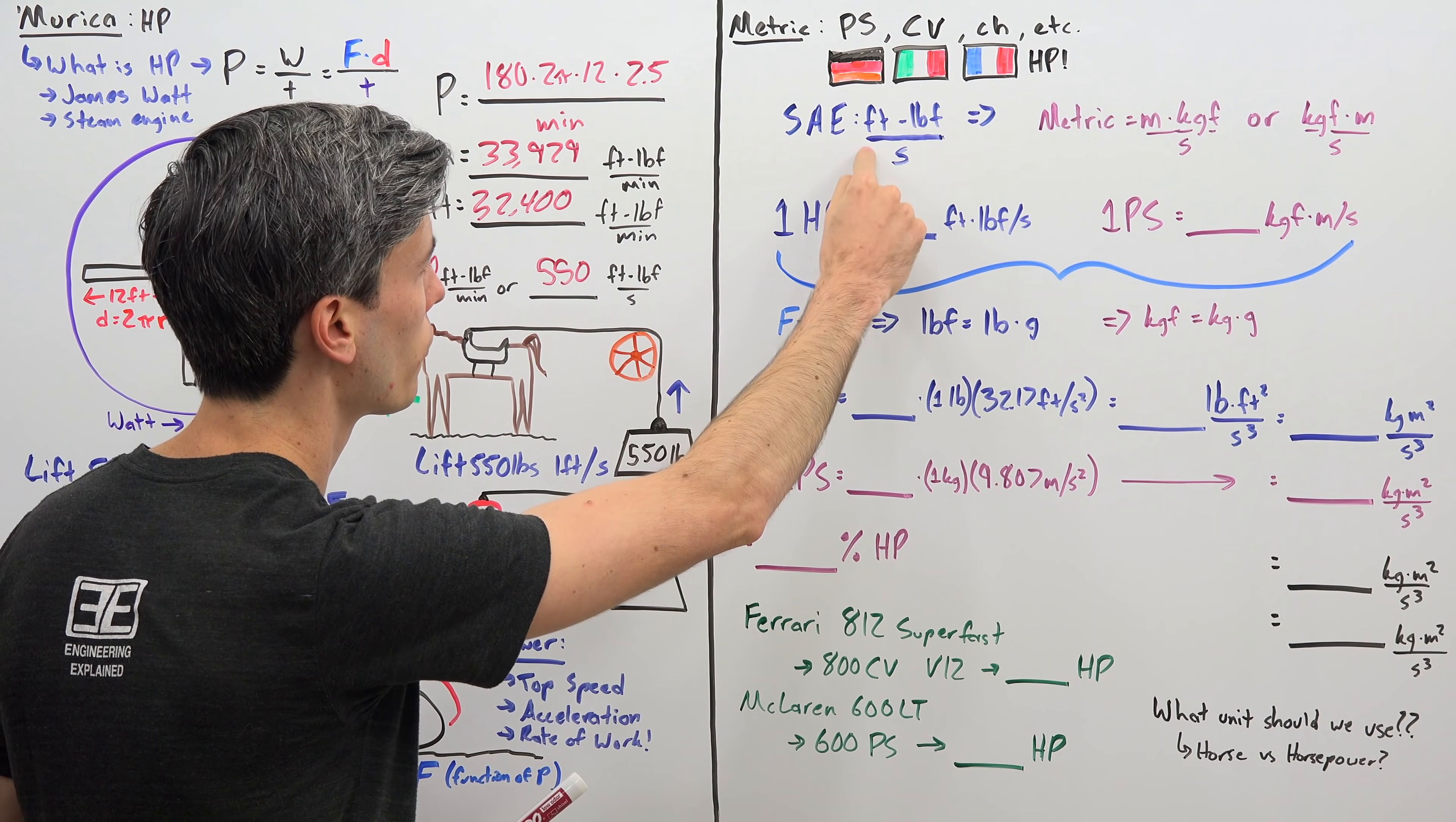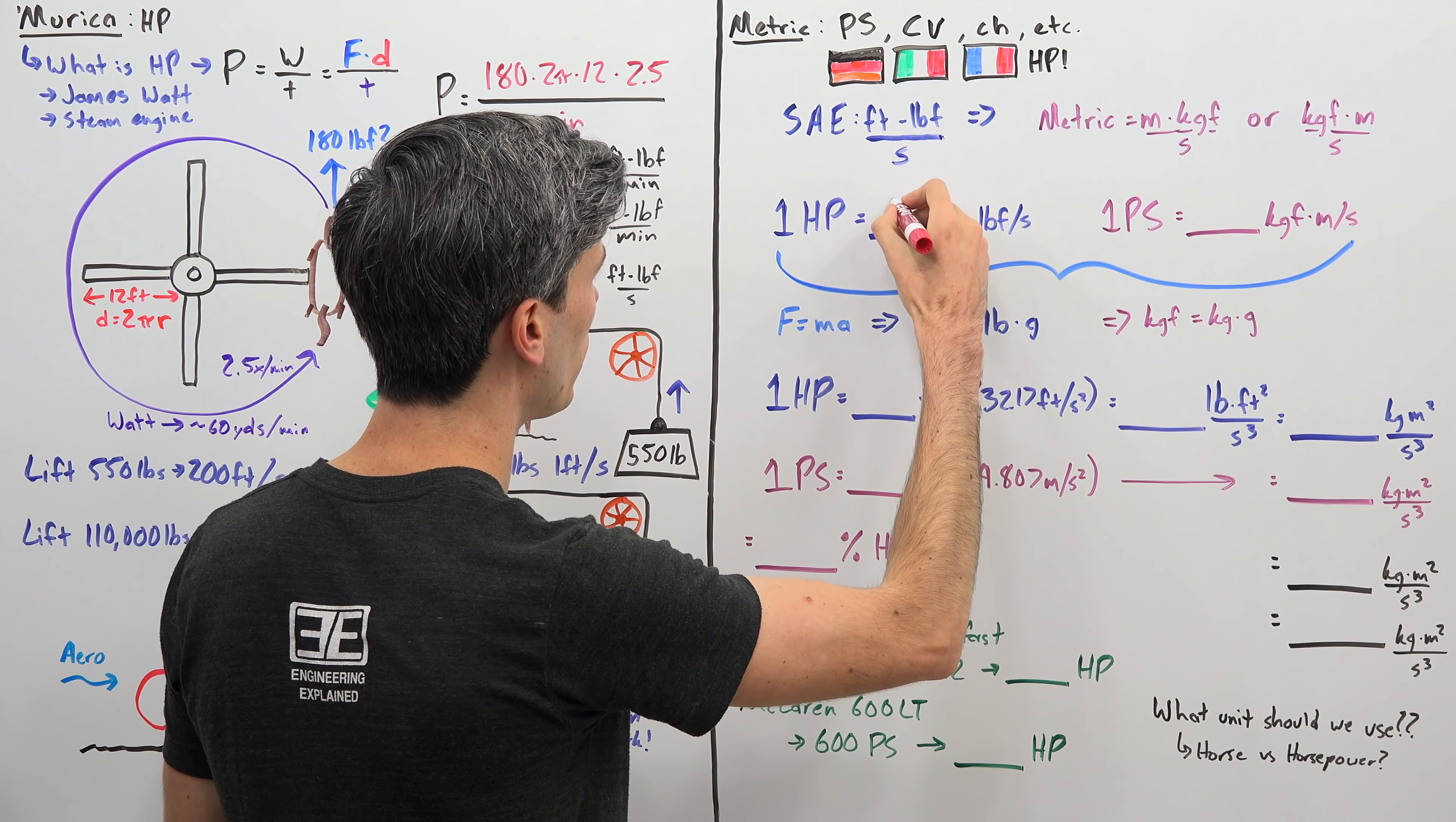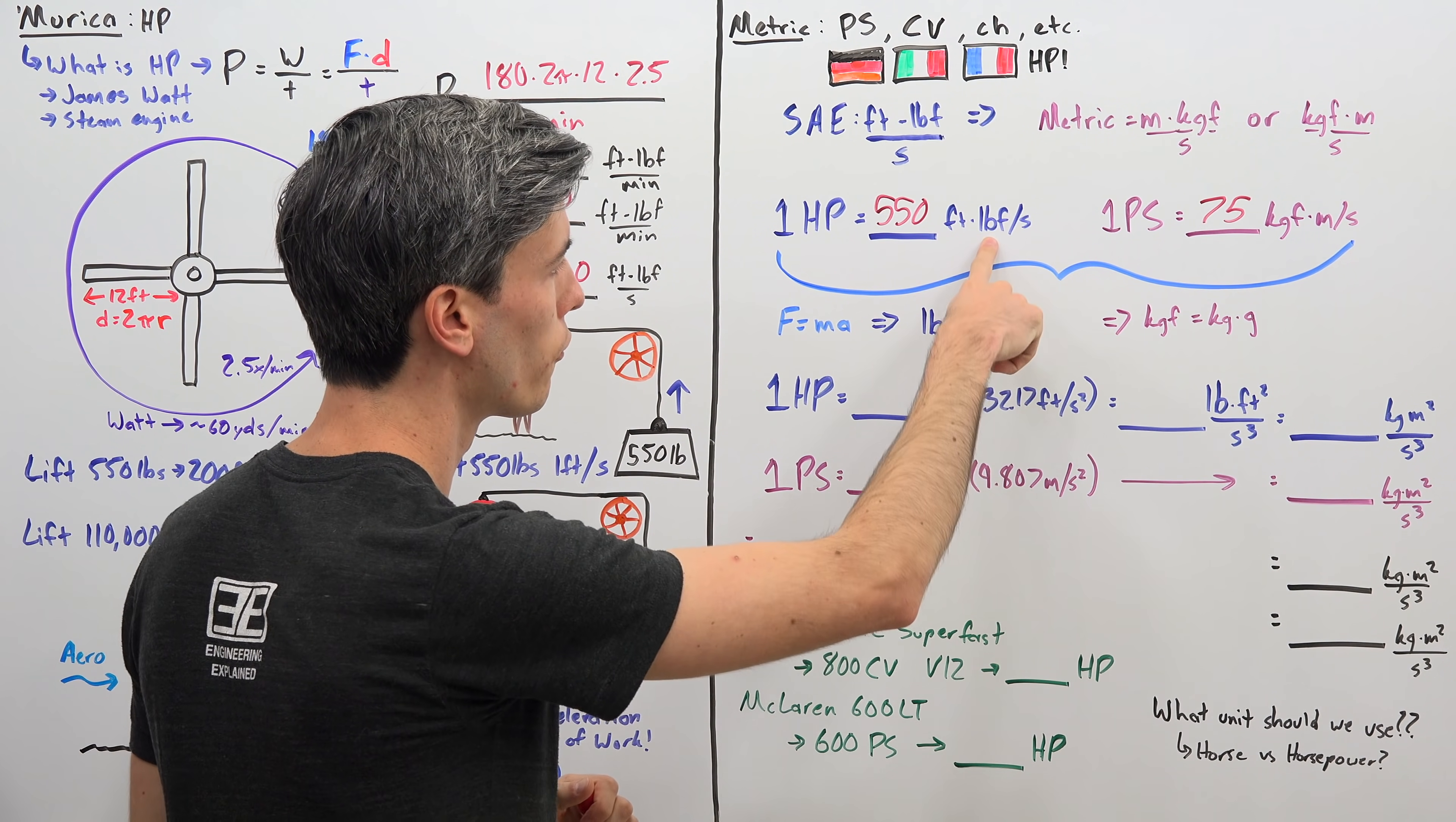And so if in SAE units we are looking at foot-pounds force per second then in metric instead of feet we have meters and instead of pounds force we have kilograms force. So in metric we are looking at kilogram force times meters per second. So one horsepower which we just figured out is equal to 550 foot-pounds force per second whereas one metric horsepower is equal to 75 kilogram force meter per second and these are fairly close.